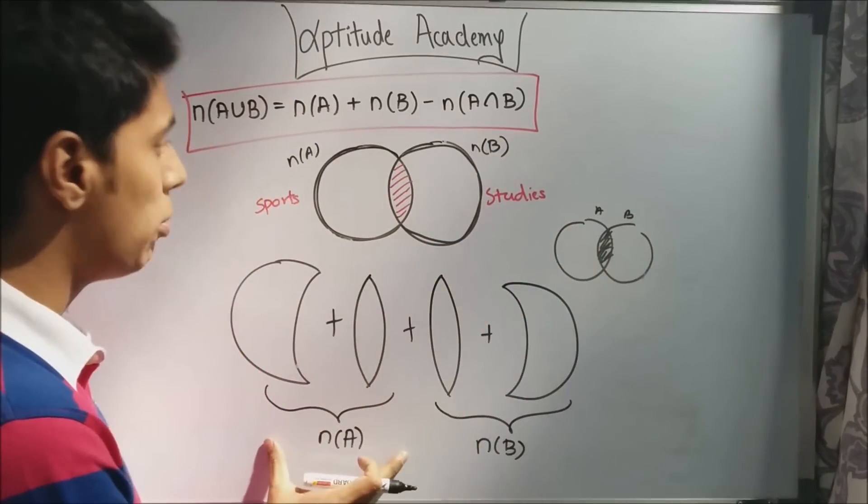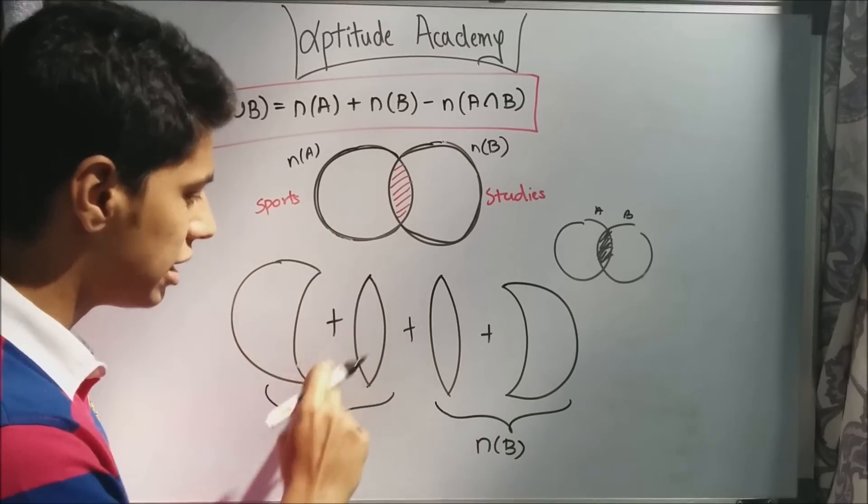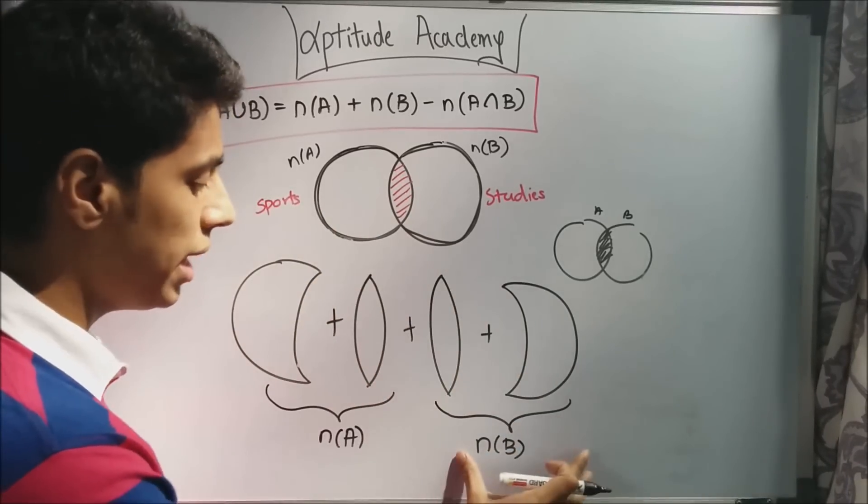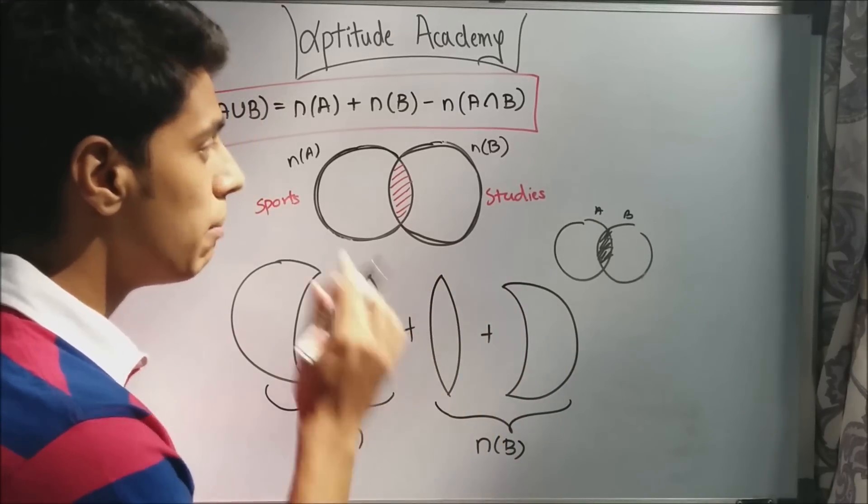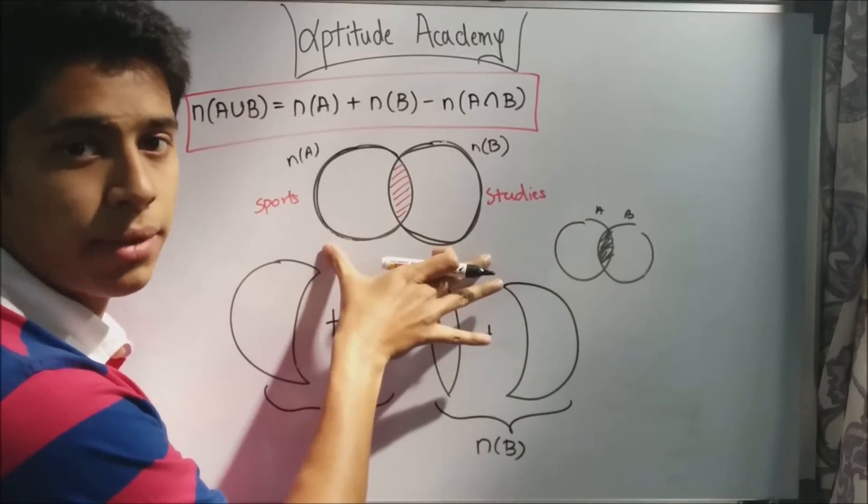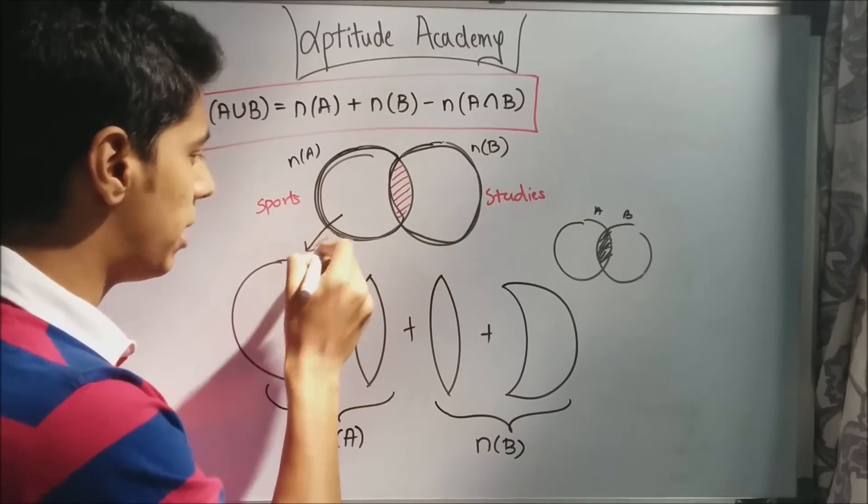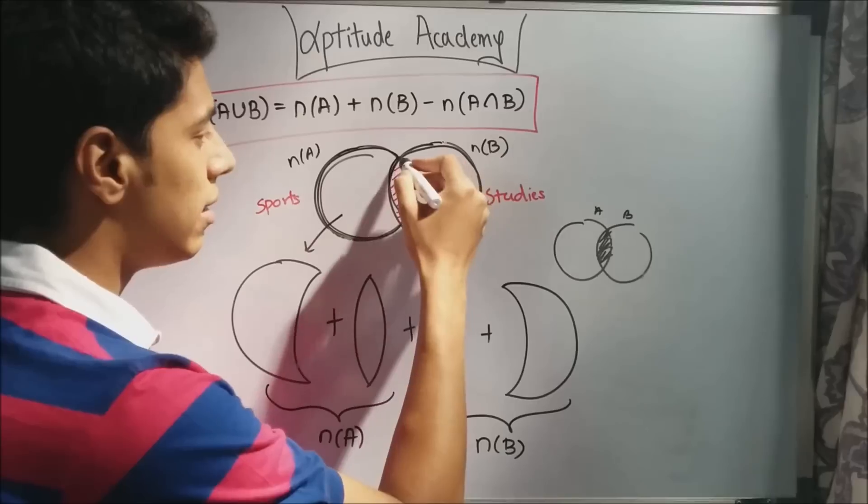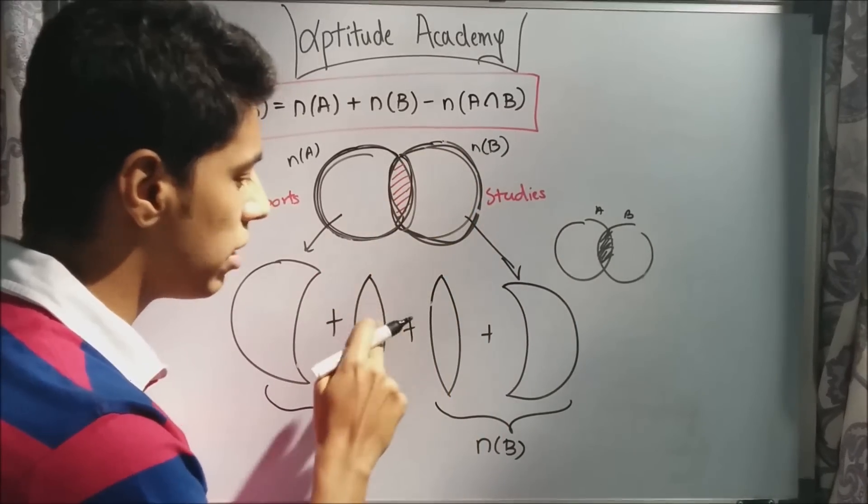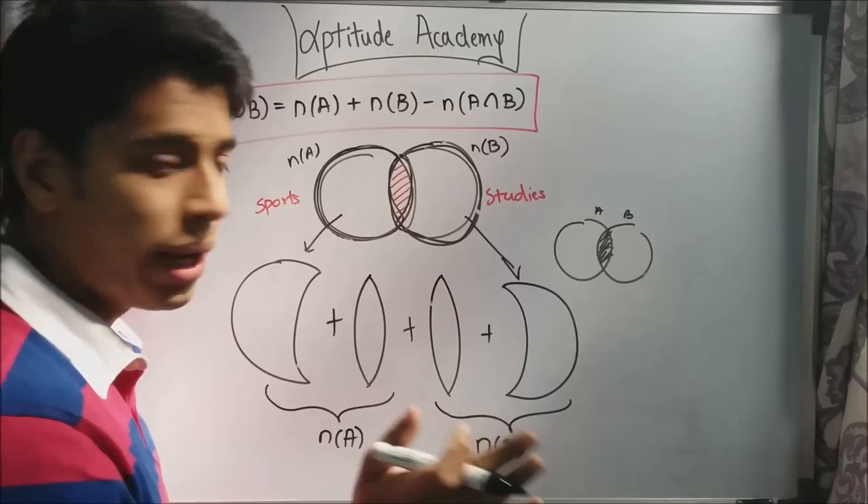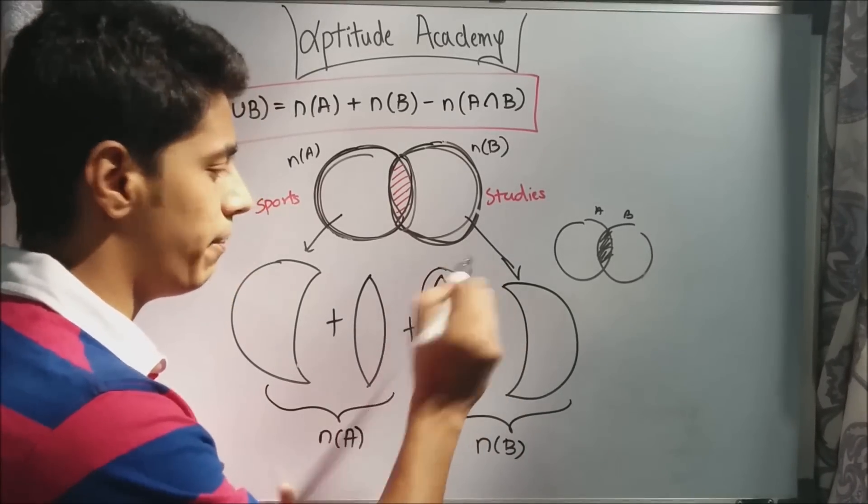Now, let us split n(A), the people who play sports, as this. This is the same circle. I have just cut this part out. And let us split B as this circle. Now, we have this half and you have the intersection. But what do we require for n(A union B)? We require this half, that we get from here. We require this half, that we get from here. And we require this middle part. That we need from any one of these. We don't need both of them. So, what we'll do is we'll add both the circles and we'll remove one of them.